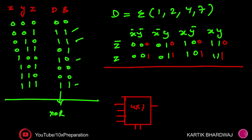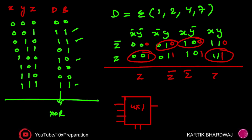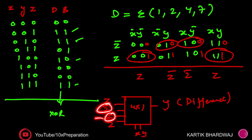For the Difference output, we apply the same reduction technique: select minterms one, two, four, and seven with X and Y as select lines. This gives MUX inputs Z, Z-bar, Z-bar, Z — identical to the Sum circuit of the full adder. Note that Z-bar is needed, so you must use either a NOT gate or a 2x1 MUX to generate the complement of Z.